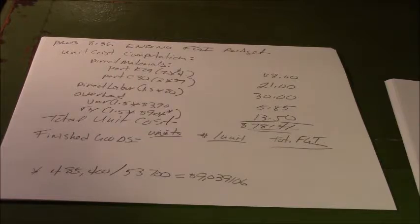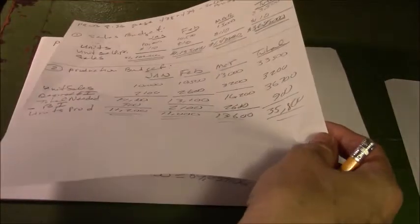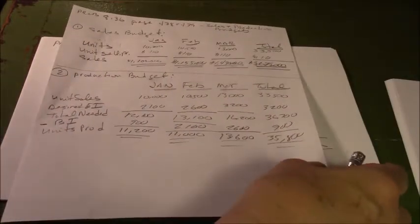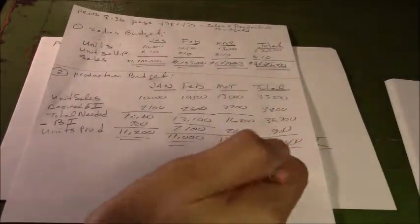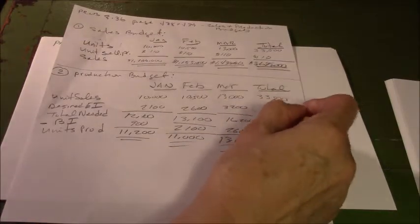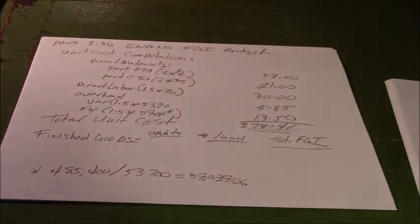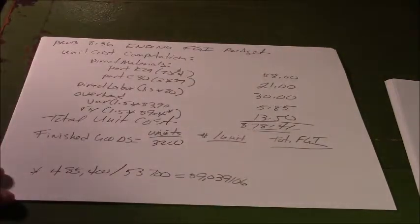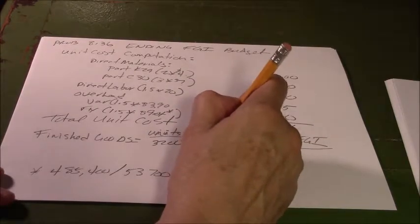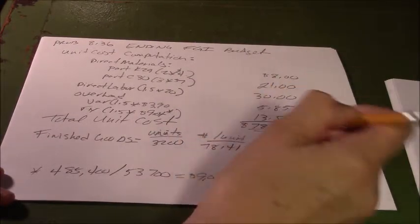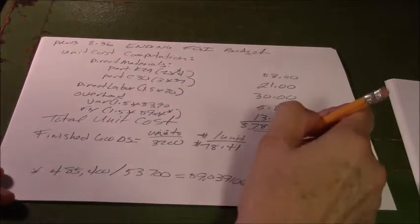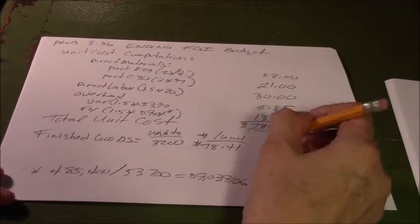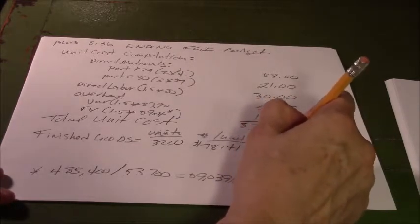Way back we did our budgets, right? We said we wanted to have an ending inventory of 3,200 at the end of the quarter. So we want to have 3,200 and it's $78.41, so 3,200 times $78.41 is $250,912.